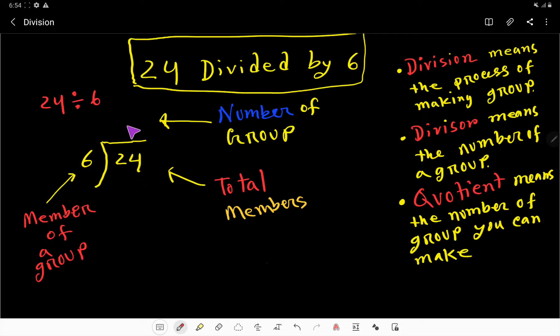And here we have to write quotient or result. So what do you mean by this division? Division means process of making group. That is, by division we always want to make group, but this 6 is a divisor, right?